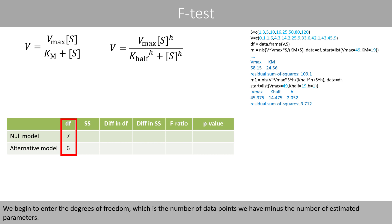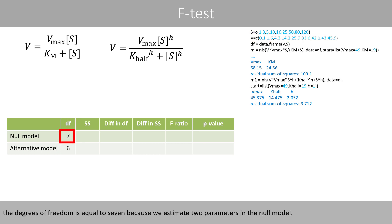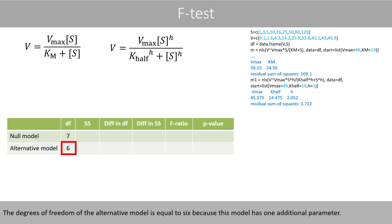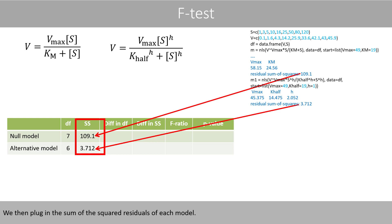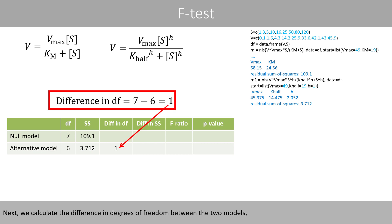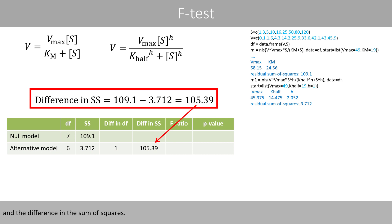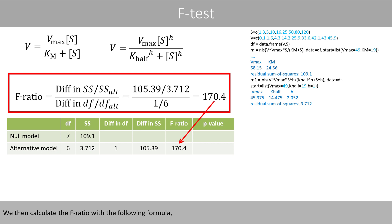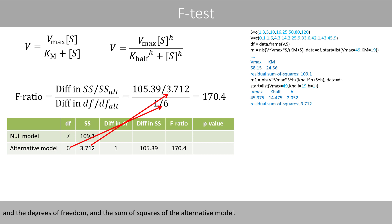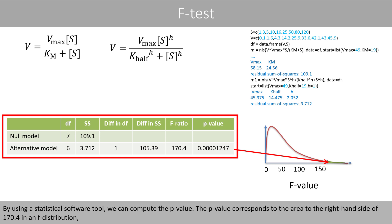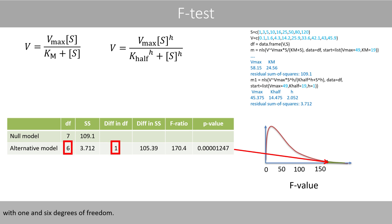We begin to enter the degrees of freedom, which is the number of data points we have minus the number of estimated parameters. Since we have nine observations, the degrees of freedom is equal to seven, because we estimate two parameters in the null model. The degrees of freedom of the alternative model is equal to six, because this model has one additional parameter. We then plug in the sum of the squared residuals of each model. Next, we calculate the difference in degrees of freedom between the two models, and then the difference in sum of squares. We then calculate the F-ratio, where we plug in the differences and the degrees of freedom and the sum of squares of the alternative model. By using a statistical software tool, we can compute the p-value. The p-value corresponds to the area to the right-hand side of 170.4 in an F-distribution with one and six degrees of freedom.